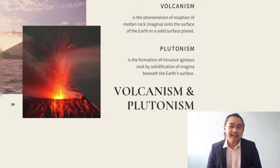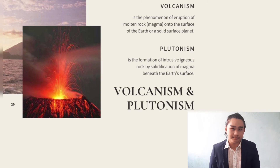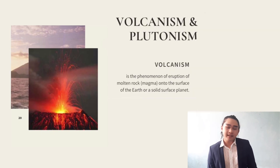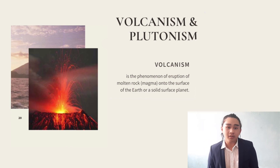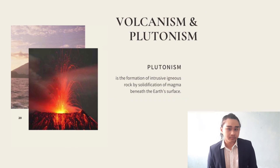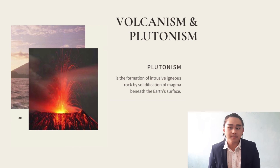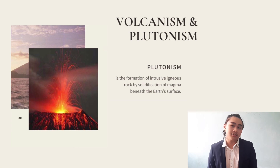The last endogenic processes are volcanism and plutonism. Volcanism is the phenomenon of eruption of molten rock, also called magma, onto the surface of the earth or a solid surface planet. Plutonism is the formation of intrusive igneous rocks by the solidification of magma beneath the earth's surface.